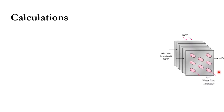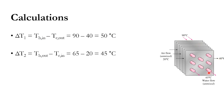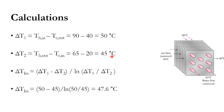Air is on the outer side, hot water on the tube side. Delta T1 = T_H,in − T_C,out = 90 − 40 = 50°C. Delta T2 = T_H,out − T_C,in = 65 − 20 = 45°C. The log mean temperature difference ΔT_LM is calculated as 47.6°C.